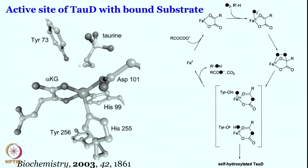This sort of reaction also happens when you do not have alpha-ketoglutarate present. If you have succinate — which originates from alpha-ketoglutarate upon decarboxylation, as seen in the last slide — then one can also get a different type of mechanism.